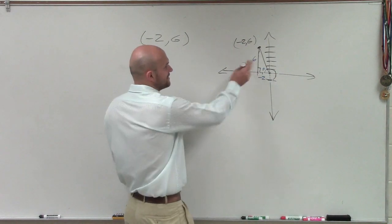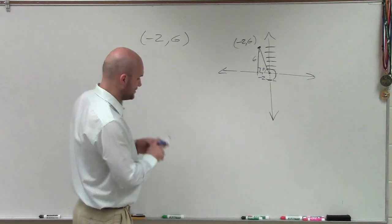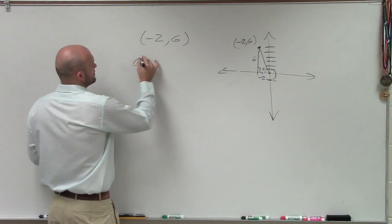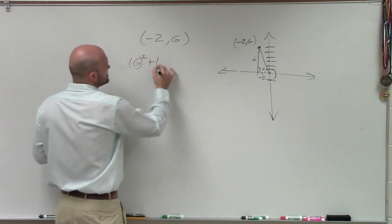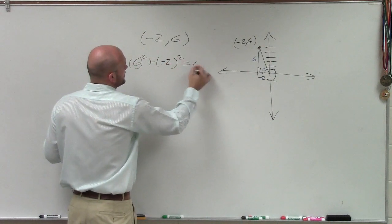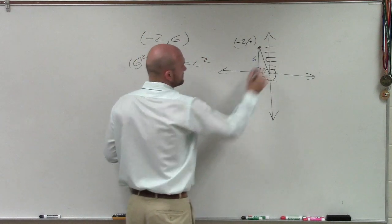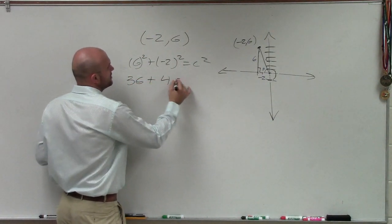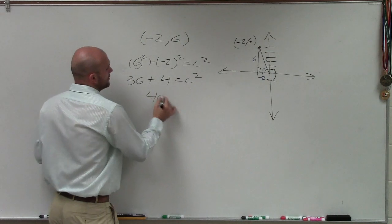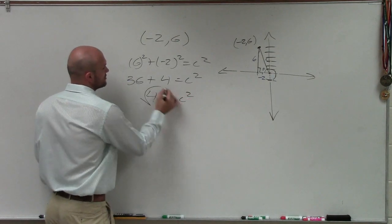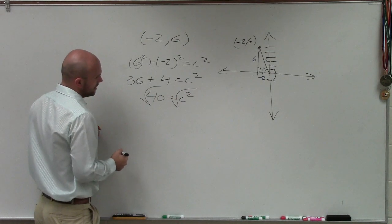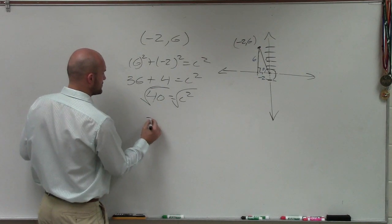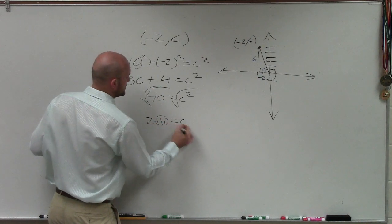So now I have the point negative 2, 6. To find my hypotenuse, I can just use the Pythagorean theorem. I'll have 6 squared plus negative 2 squared equals c squared. So I have 36 plus 4 equals c squared. 40 equals c squared. Taking the square root, that's going to reduce down to 2 square root of 10 equals c.